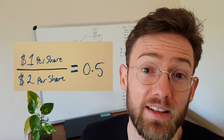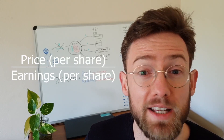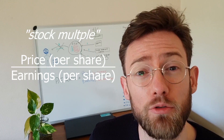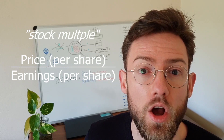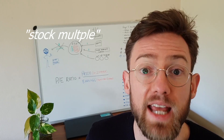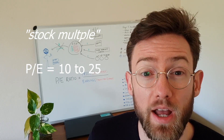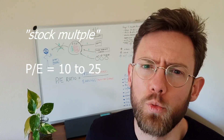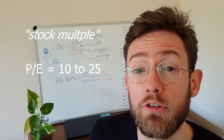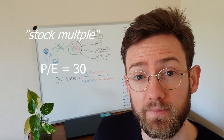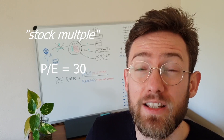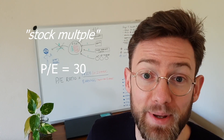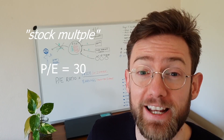Now this is a pretty ridiculous and unrealistic example. The PE ratio is also called the stock multiple, and generally what we'll see in the stock market are stock multiples or PE ratios of anywhere between 10 and 25, and for tech companies even much higher. That means if we see a PE ratio of 30, the current price per share is 30 times how much profit that company makes per share every year.